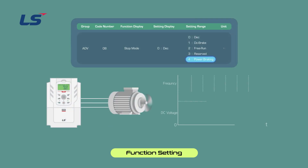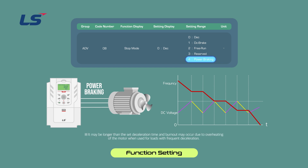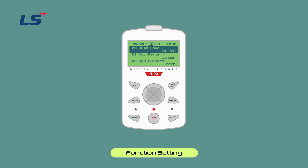Power Braking stop method adjusts the deceleration slope or accelerates again to reduce regenerative energy when the AC drive DC voltage rises above a certain level due to motor regenerative energy. It can be set and used when a short deceleration time is required without a separate braking resistor and braking unit. Note that the deceleration time may be longer than the set deceleration time, and when using it for a load that frequently decelerates, damage may occur due to motor overheating. When you press the Enter key in ADV8 stop mode, use the direction keys to move to number 4 power braking and press the Enter key to complete the power braking setting.